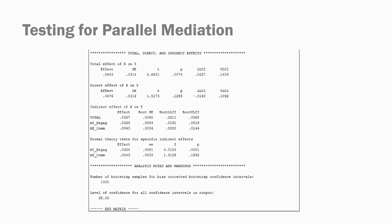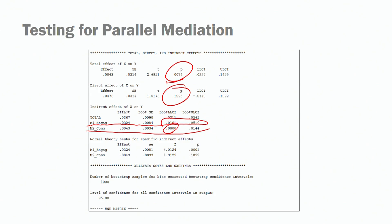Looking at the bootstrapping analysis: the total effect is significant (p < 0.05), but the direct effect is not significant — so with both mediators in the model, the effect of job meaningfulness on job performance is not significant. The indirect effect via engagement is significant because there is no zero in the confidence interval of the bootstraps. However, for commitment, zero is within the confidence interval, so the indirect effect is not significant. This reinforces the earlier finding that the relationship between commitment and job performance was not significant.